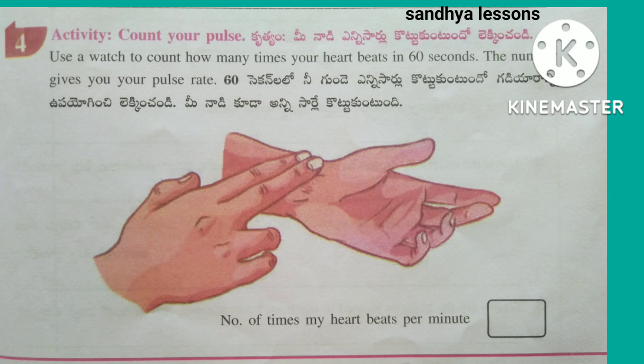Fourth, use a watch to count how many times your heart beats in 60 seconds. The number gives you your pulse rate. The number of times my heart beats per minute is 72.